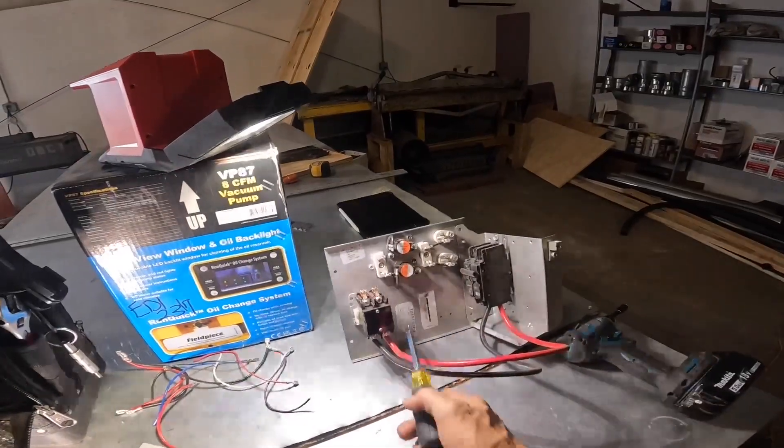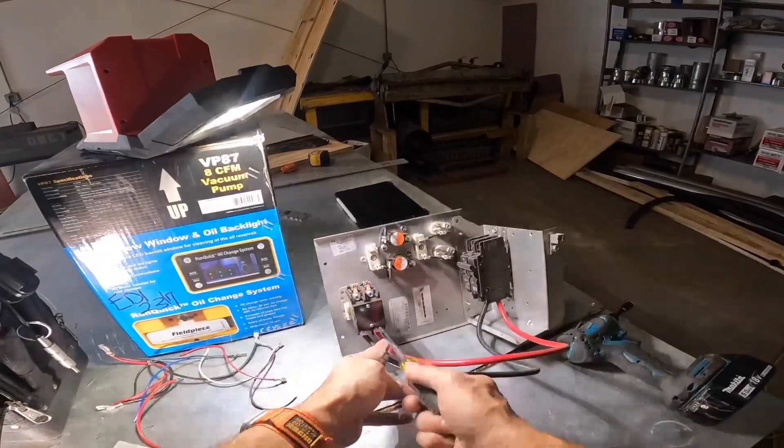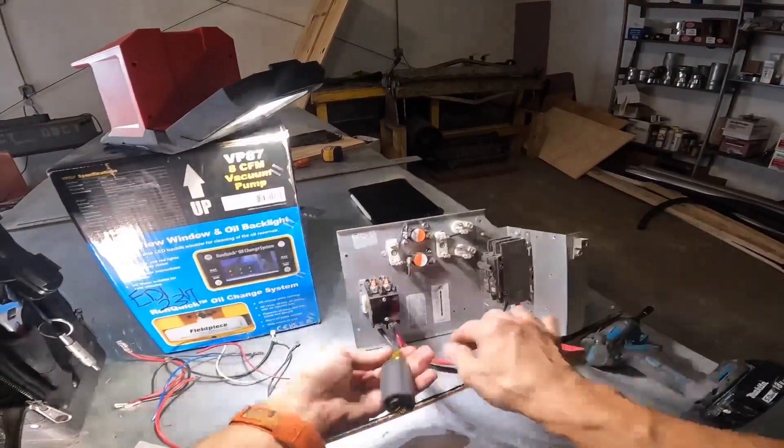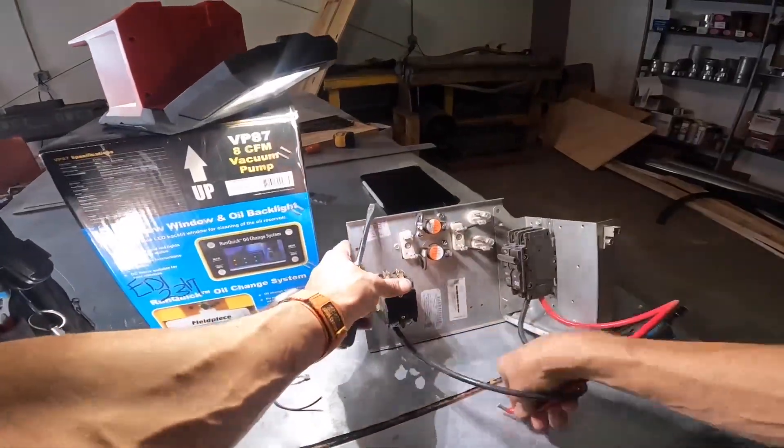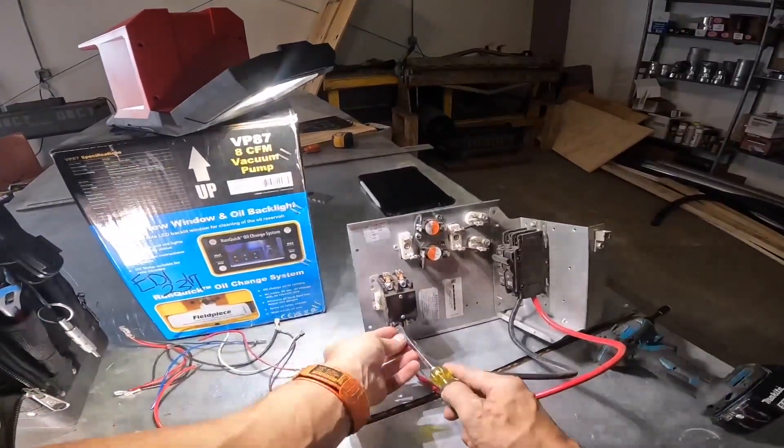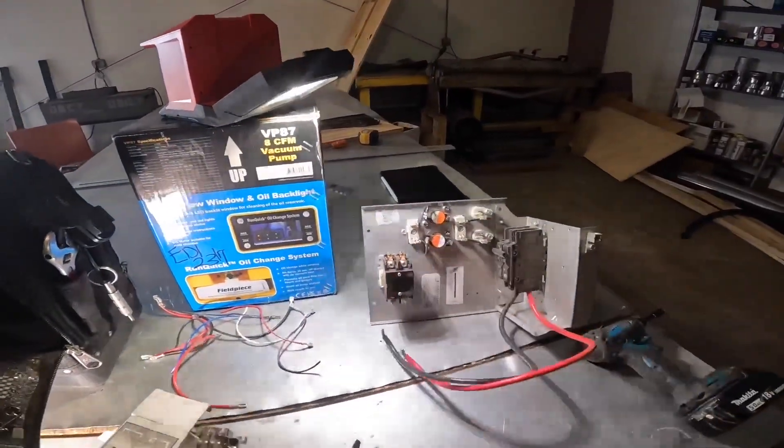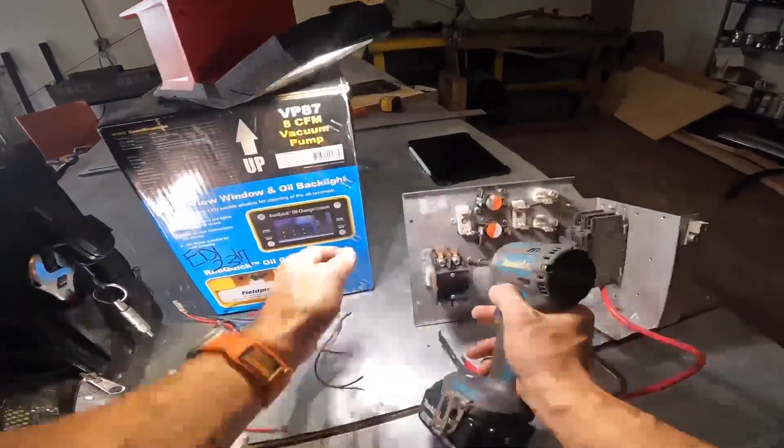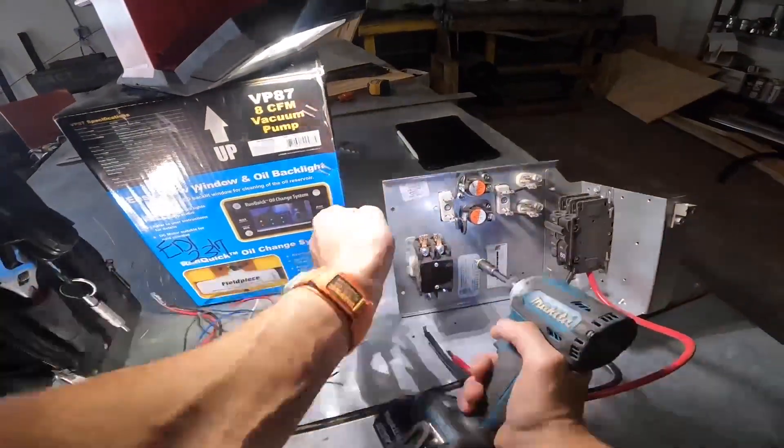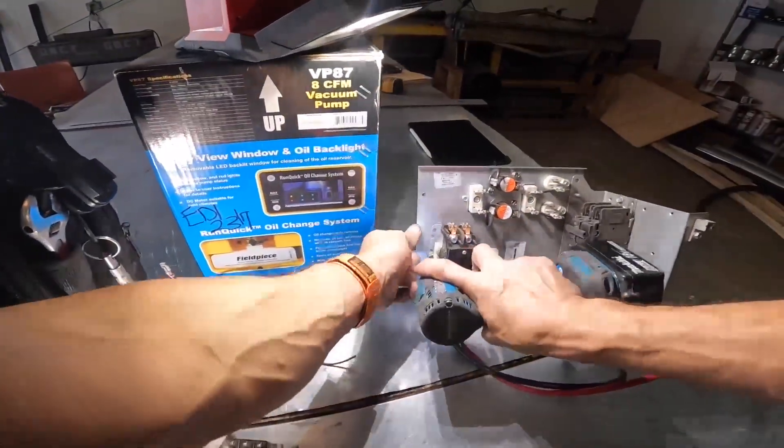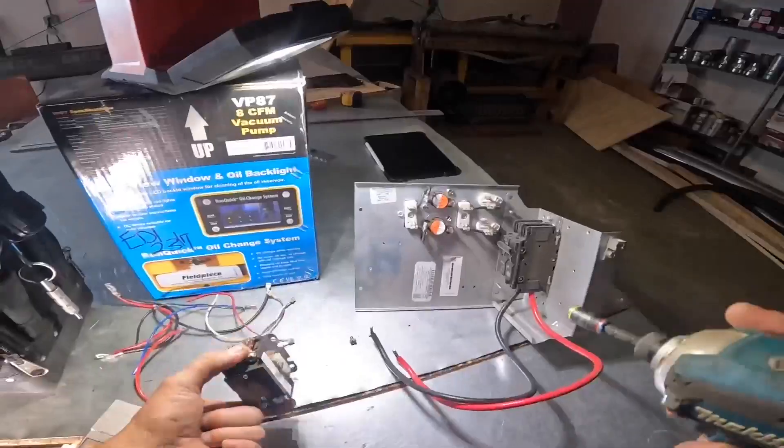So the first thing we need to do is get rid of this contactor. I've rarely used a contactor when I'm wiring up heat strips myself. Although you can use a contactor or a 9340 relay or a sequencer. Let's just take that off.